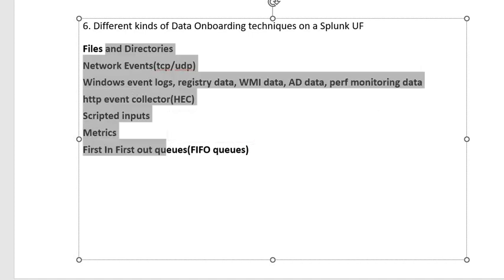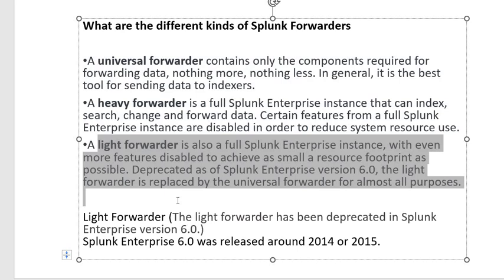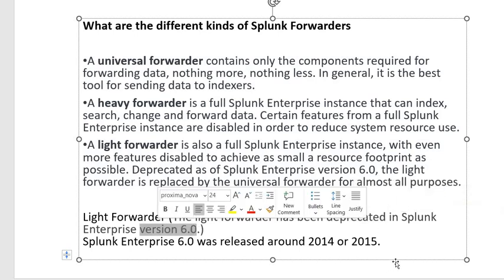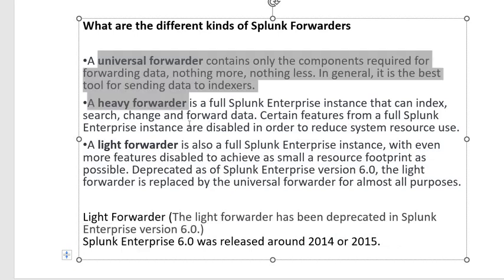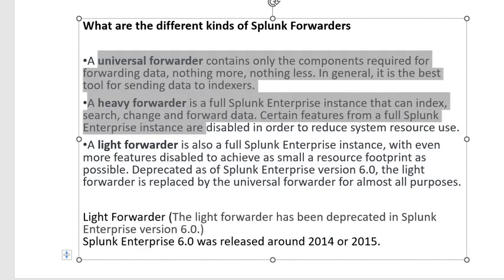Sometimes managers will ask about the light forwarder. The light forwarder is deprecated — please remember that. It was deprecated at Splunk version 6, around 2014 or 2015. So currently we have only two kinds of forwarders: Universal Forwarder and Heavy Forwarder.